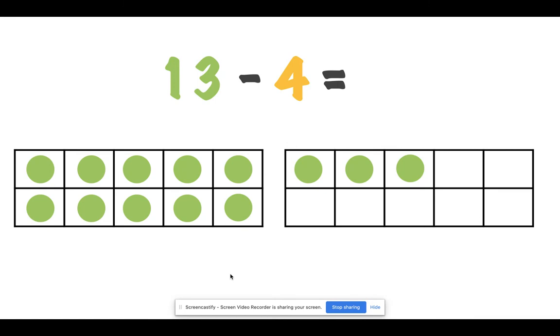Let's try some more. Here the number sentence says 13 minus 4. We started with 13 counters. So how many do I need to mark with an X? Did you say 4? Good. So let's take away 4: 1, 2, 3, 4.